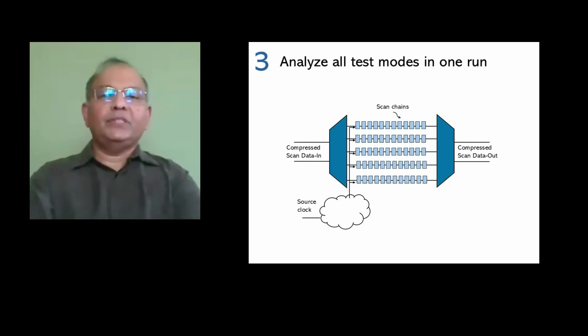Number three, multiple sets of constraints and rules must be applied to cover all targeted test modes, such as compressed, uncompressed, and at-speed scan tests.